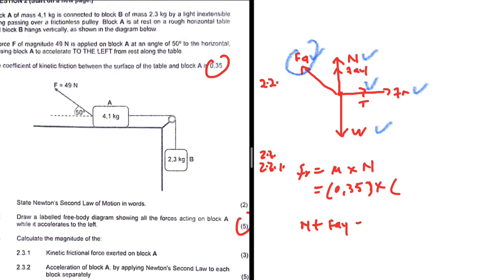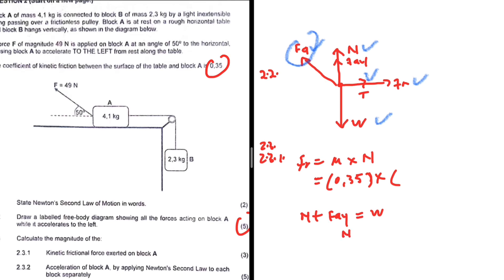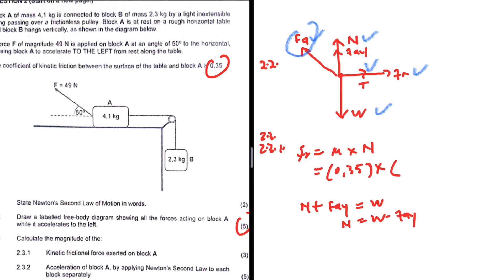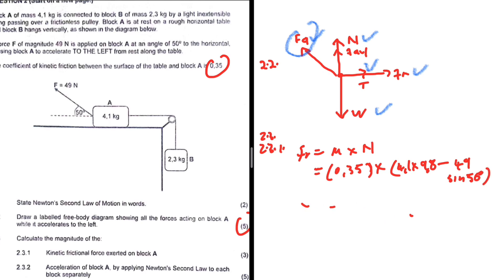The normal force plus the y-component of the applied force equals the weight, because the object is neither moving up nor down. So the normal force equals the weight minus the y-component of the applied force. The weight is 4.1 × 9.8, minus the y-component which is 49 sin(50°). Therefore the frictional force = 0.35 × (4.1 × 9.8 − 49 sin 50°) = 0.93 newtons.